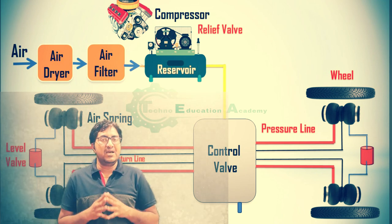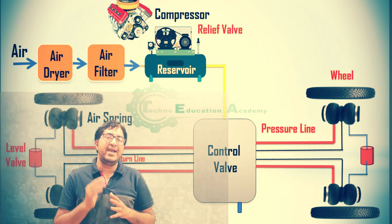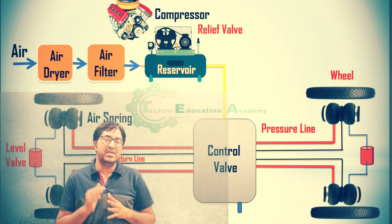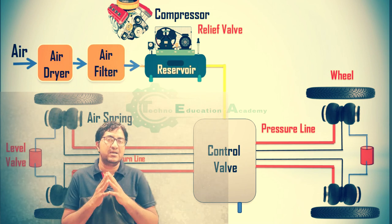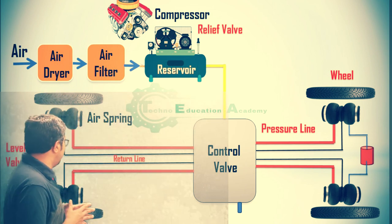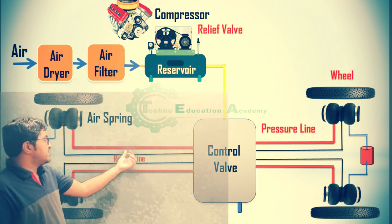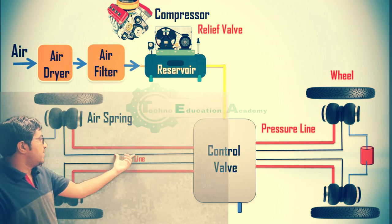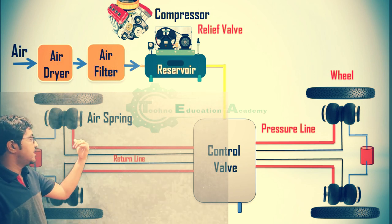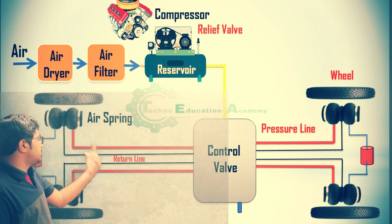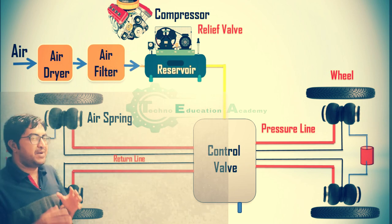The function of the level valve is to maintain the particular height of the vehicle — it maintains the height of the air spring. Here you can see that this high-pressure air, through the control valve, is supplied to the air spring. In the air spring, the level is maintained properly.